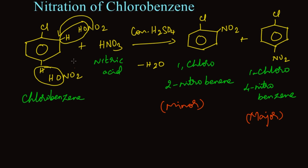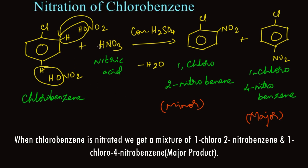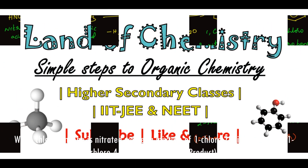To summarize: when chlorobenzene is nitrated in the presence of concentrated nitric acid and concentrated sulfuric acid, we get products of 1-chloro-2-nitrobenzene and 1-chloro-4-nitrobenzene. The major product is the para isomer, that is 1-chloro-4-nitrobenzene. Thank you.